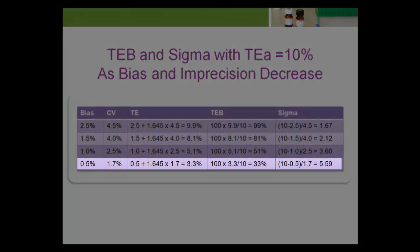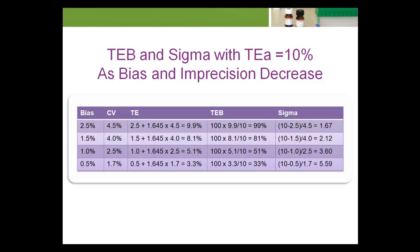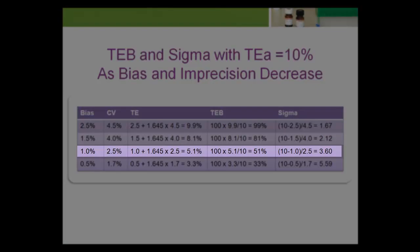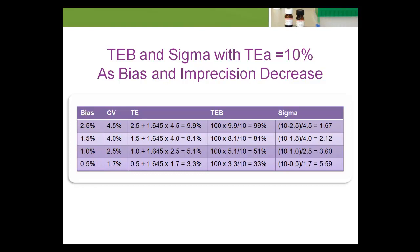In the fourth row of the table, the bias is 0.5 percent and the CV is 1.7 percent. TE equals 3.3 percent, TEB equals 33 percent, and sigma equals 5.59. A process where only a third of the TEA specification is consumed by the test system's bias and imprecision is associated with a high sigma value. Row 3 of the table suggests that for the test system to be capable of meeting the laboratory's desired quality goals — sigma values greater than or equal to 3.5 — the TEB should not exceed 50 percent. If more than 50 percent of your allowable error specification is consumed by your test system bias and imprecision, you are going to have a difficult time assuring that your reported patient results are meeting your quality goals. A lab should strive for a TEB of 33 percent or less.